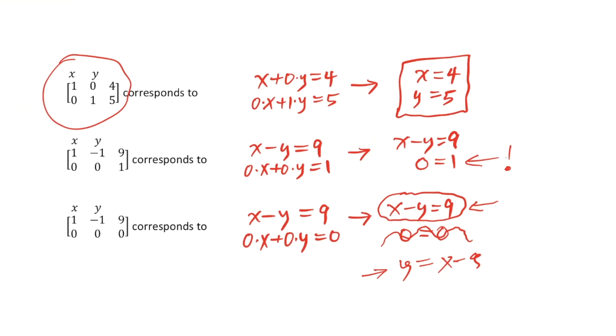That would be a line with slope 1 and y-intercept, right, y equals mx plus b, m is 1, so the slope is 1, and b here would be negative 9. That would be a y-intercept of negative 9. There's infinitely many points on that line. This is an example of a system with infinitely many solutions.